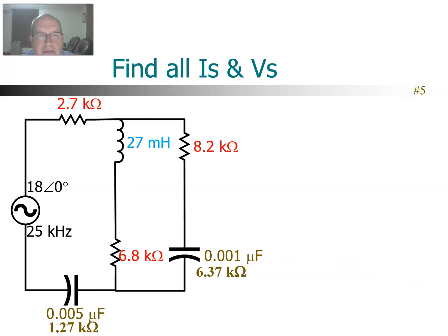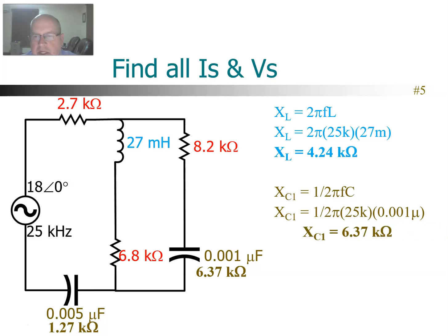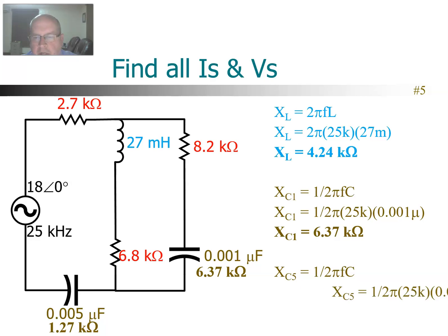Now we'll wrap things up with a circuit that shows you a little bit of everything. We're back to original capacitance and inductance values, and we have to find the capacitive reactance, inductive reactance, and then solve everything — including all the currents and all the voltages. X of L = 2π FL gives a value of 4.24K. X of C for the first capacitor — the one in the parallel branch — comes out to 6.37K. And then the capacitor that's in series, the 0.005 microfarad one, works out to be 1.27 kilohms.